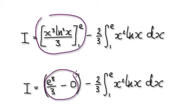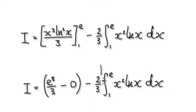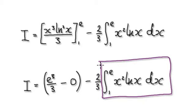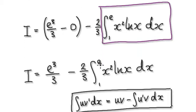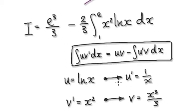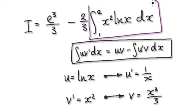Now we just need to evaluate the remaining integral I. Repeat the same integration by parts process — we are now going to evaluate this integral of x² ln(x) dx.